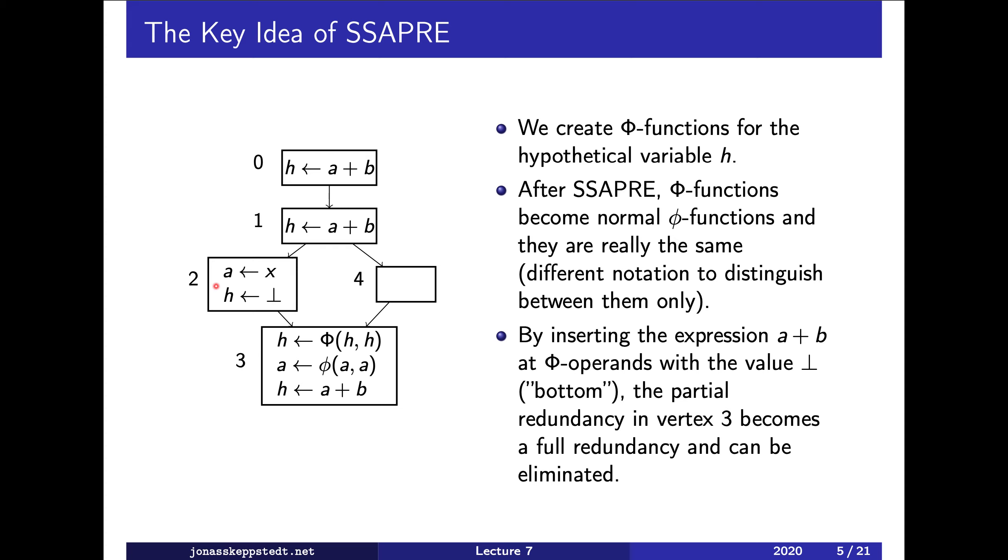So since we have an assignment to H here, we need a phi function for H here. This phi function uses capital T and it is used essentially in the same way as the normal phi functions, but to see which one is which, we use capital T instead. And then at the end of SSA PRE, how the implementation marks this as a normal phi function is irrelevant, but we translate this to normal phi functions. So essentially they are really the same.